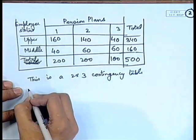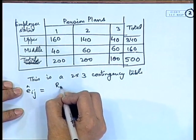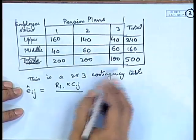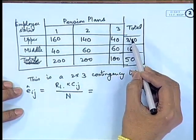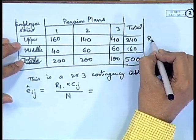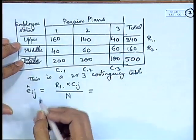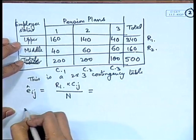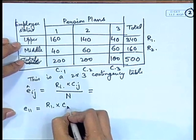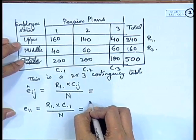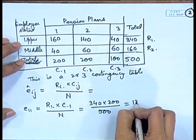The values of the E_ij's are calculated by r_i dot times c_dot_j divided by n. The row totals are r_1_dot and r_2_dot, and the column totals are c_dot_1, c_dot_2, c_dot_3. So we can easily calculate E_11: E_11 = r_1_dot × c_dot_1 / n. In this particular case it is 340 × 200 / 500, which turns out to be 136.